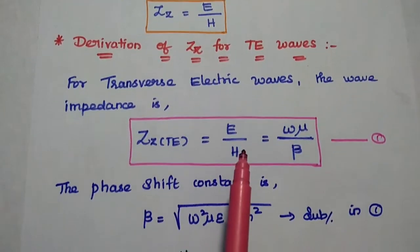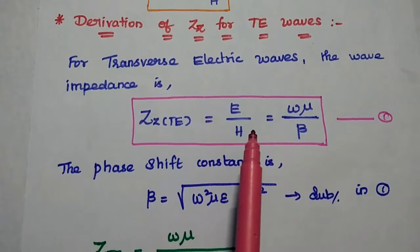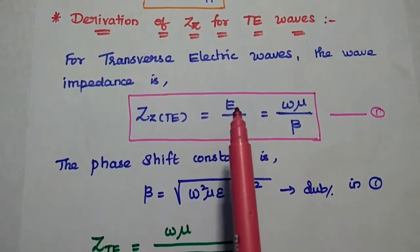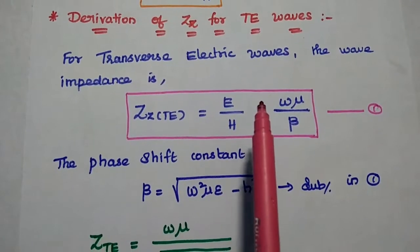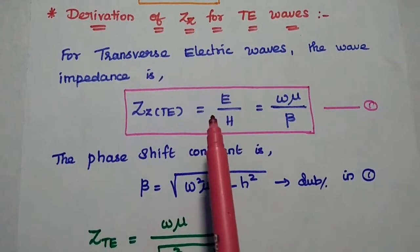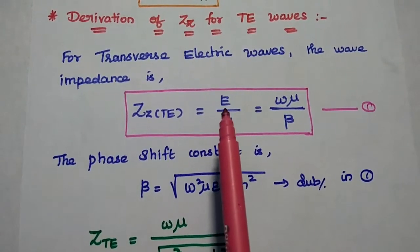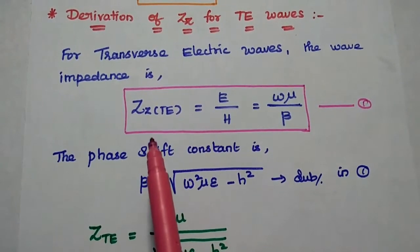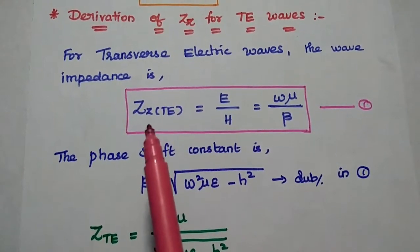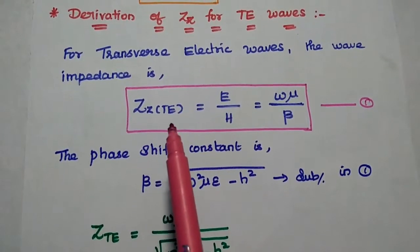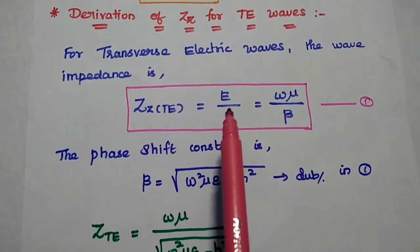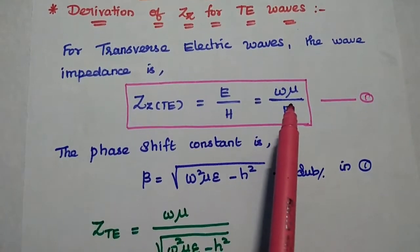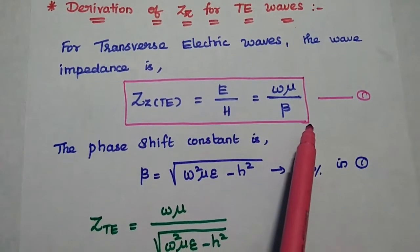We are going to derive the wave impedance for transverse electric waves. We have already derived the field components for transverse electric waves in the previous lecture video. In that, we obtained the relation between the electric field and magnetic field components, and here we are going to use that relation. The wave impedance for the transverse electric wave is given as E by H, which is also equal to omega mu by beta. Consider this as the first equation.